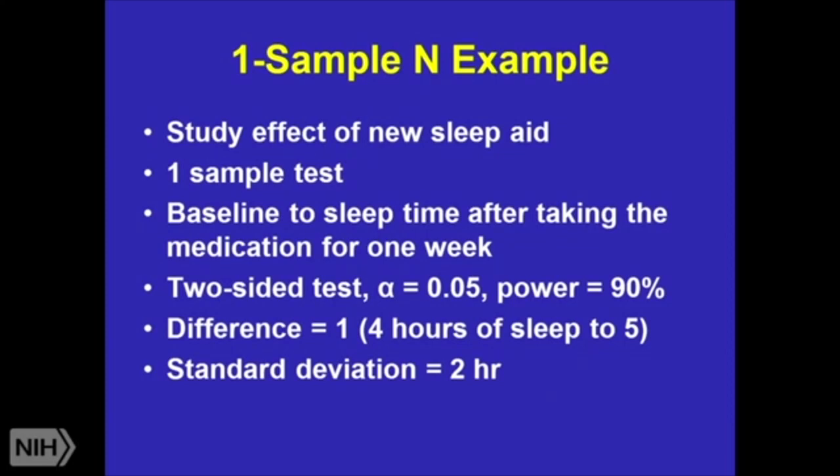So let's go back to a single sample test. I've got a new sleep aid. I want to look at baseline sleep time, sleep time after taking the medication for a week. I'm going to run a two-sided test, alpha equals 0.05, power of 90%. The difference is on average one. So I think on average people are going to have four hours of sleep at baseline and I'm going to move them to five hours of sleep after my intervention for one week. Standard deviation, two hours. These are not real numbers, they are numbers to make this thing move.